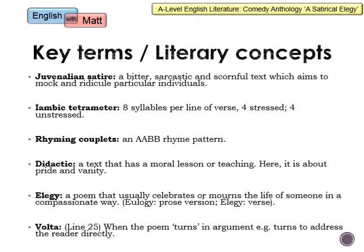For AO1, using the terms in bold will get you AO1, and discussing the meanings and effects of those terms would get you AO2 — so these terms can hit two assessment objectives. The full title is A Satirical Elegy on the Death of a Late Famous General, but I'll call it A Satirical Elegy for short. It has the word satire in the title, so one key term is juvenalian satire — a type of satire which is very bitter, sarcastic and quite scornful, aiming to mock and ridicule particular individuals seen as incompetent or undeserving of their power and prestige.